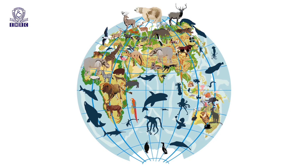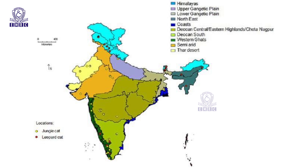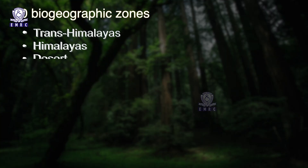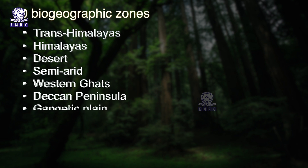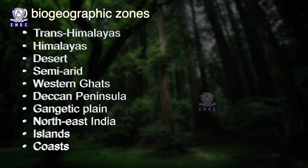Biogeography deals with the geographical distribution of plants and animals. Biogeographic zones were used as a basis for planning wildlife protected areas in India. There are 10 biogeographic zones clearly distinguished in India: the Trans-Himalayas, Himalayas, Desert, Semi-arid, Western Ghats, Deccan Peninsula, Gangetic Plain, Northeast India, Islands, and the Coasts.